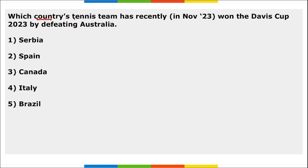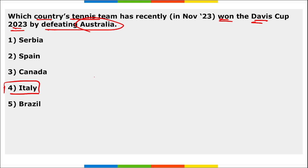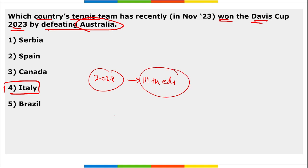Next: which country's tennis team recently won the Davis Cup 2023 by defeating Australia? It is Italy. Italy's tennis team won the Davis Cup 2023 by defeating Australia in the finals. This was the 111th edition of the Davis Cup.